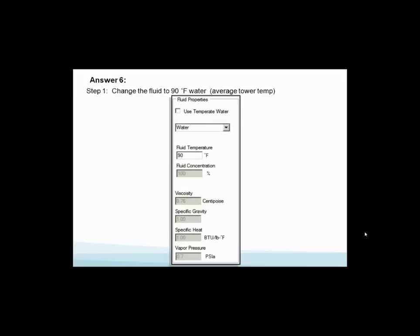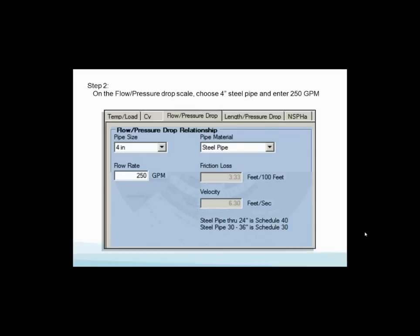Let's take this information. Let's go to our system sizer. First thing we're going to do is correct that water temperature. We said 85 to 95, so we go to fluid property. Let's correct it to the average water temperature - 85 to 95, average is 90 degrees. We've got water, fluid temperature is 90. Let's go pick a pipe. We've already done that - we've been to the flow pressure drop chart to come up with 4-inch pipe at 250 GPM using steel pipe. You see the pressure drop is 3.33 feet per 100 feet of pipe. The velocity is 6.3 feet per second, and this is based on Schedule 40 steel pipe.